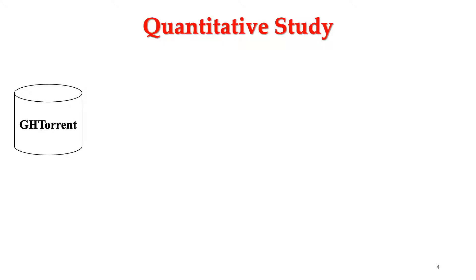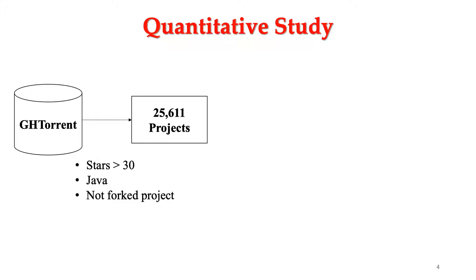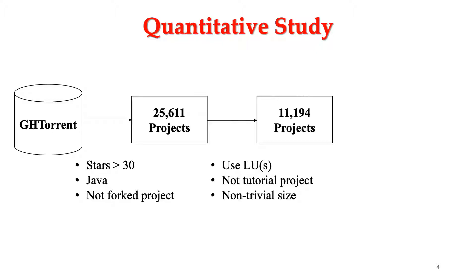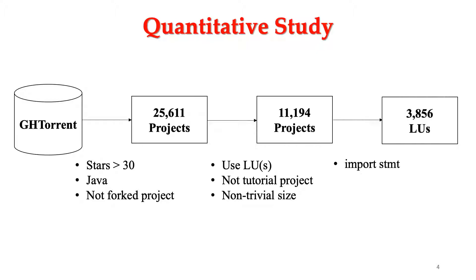To get a better idea of the current practice, we conduct a quantitative study first. We extract GitHub projects from GH Torrent, which is a very popular database. We set a couple of filtering criteria, such as number of stars, programming language, and whether this project is forked or not. After this filtering, we have 25,611 projects. We further filter them by checking if a project ever uses LUs, or whether it is a trivial project such as a tutorial or very small size. Then we check import statements by doing static analysis and count the total number of LUs being used. In the end, we extracted 3,856 LUs being used.